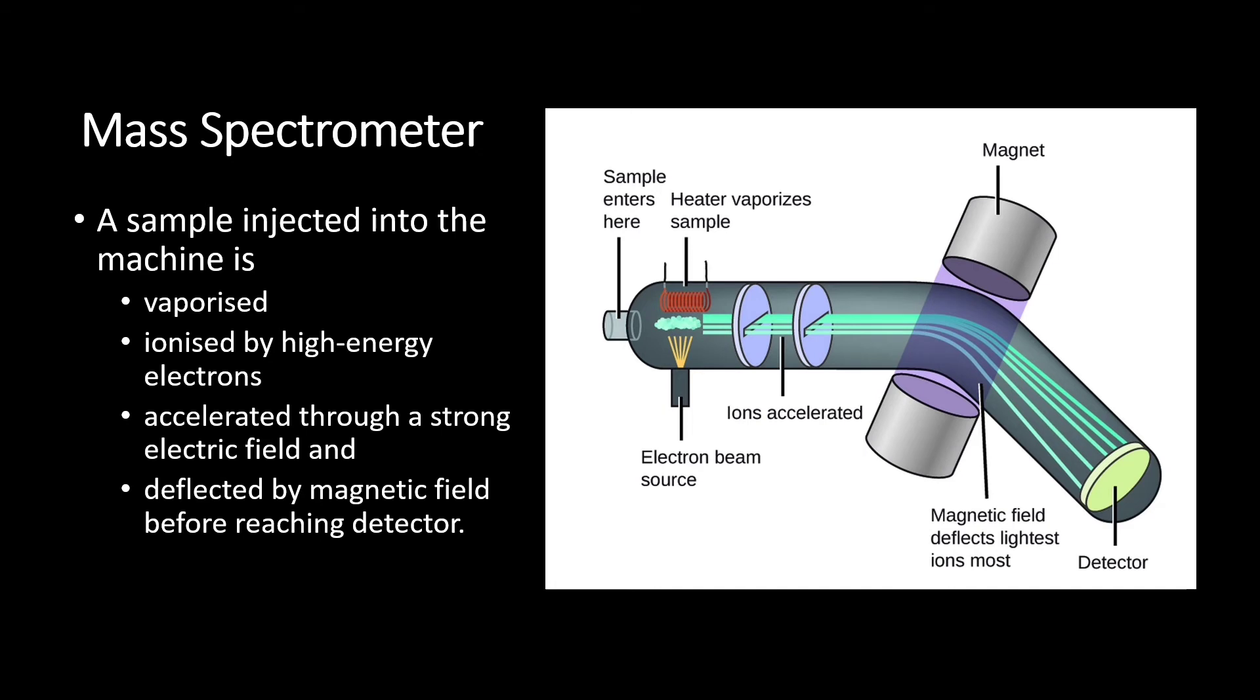This is mass spectrometer, a device or machine that is usually used in mass spectrometry. So in mass spectrometry, first there is a compartment for us to put the sample and then the sample will be heated and become gas.